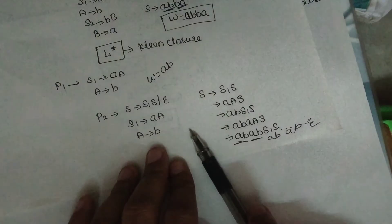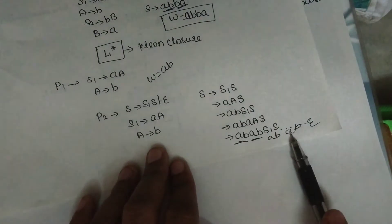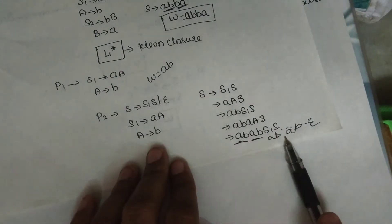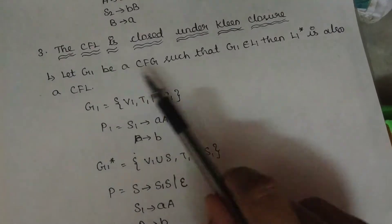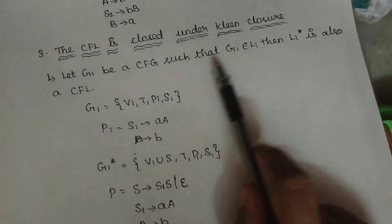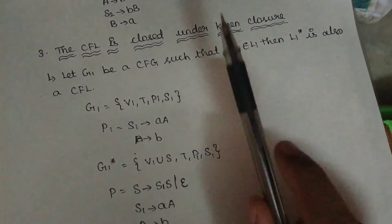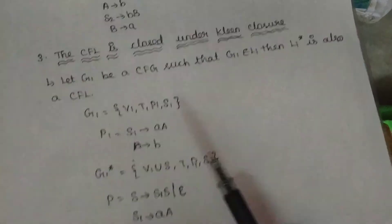If you have Kleene closure, it is supported. So what we say about this is: the Kleene closure of the context-free language is also a context-free language.